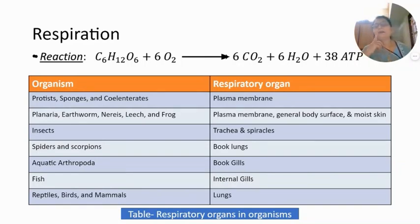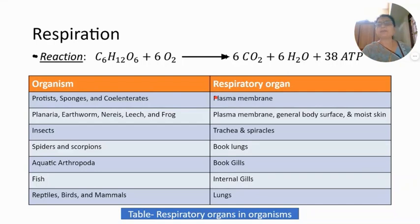In kingdom Protista, the unicellular organisms such as Amoeba and Paramecium are single-celled organisms using their cell membrane or plasma membrane for exchange of gases and for respiration. In case of sponges, these animals have a cell aggregate pattern but no well-organized system and no well-developed organs. Because of that, in sponges also the plasma membrane or cell membrane is used as the respiratory organ.